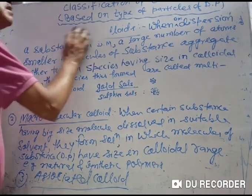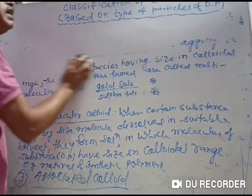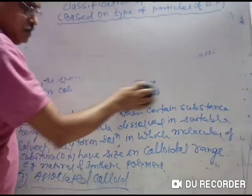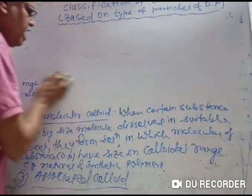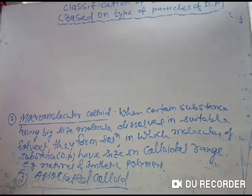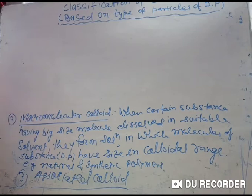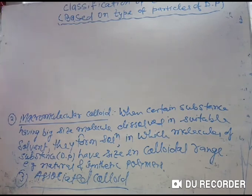In the case of macromolecular colloid, the particles of dispersed phase are very large and they already have colloidal dimensions. When they are dispersed in water or any other suitable dispersion medium, they already have colloidal dimensions. This means that in macromolecular colloid, the colloidal particles are themselves large molecules having already colloidal dimensions.